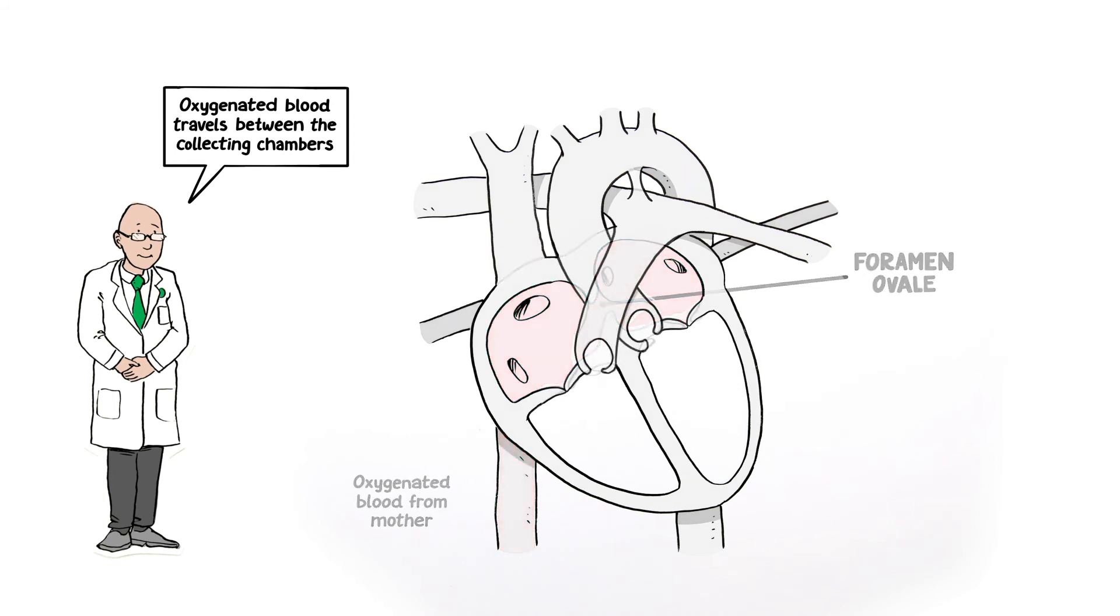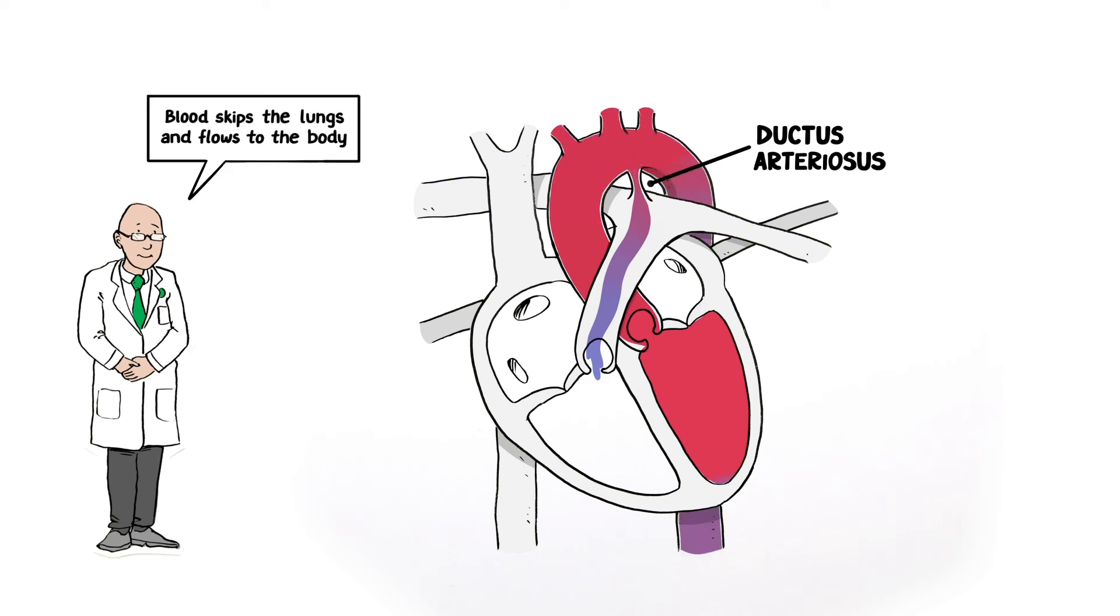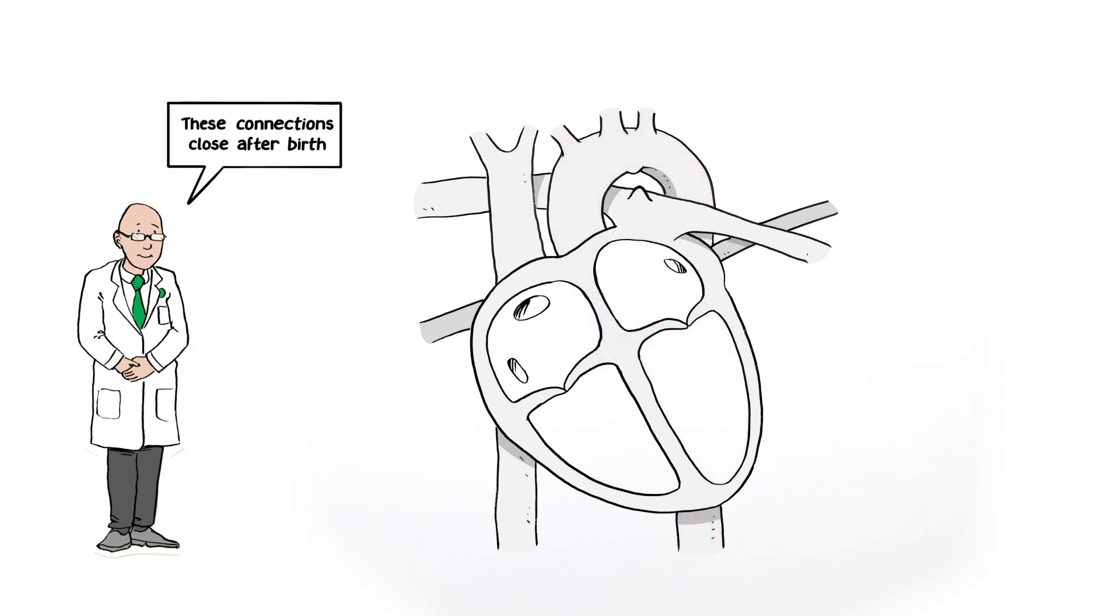A connection between the arteries supplying the lungs and the body called the ductus arteriosus allows blood to skip the lungs and flow directly into the body. Finally, these connections close after birth when the baby breathes on its own.